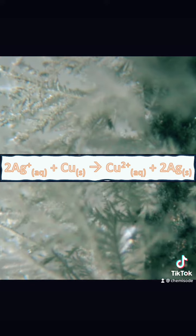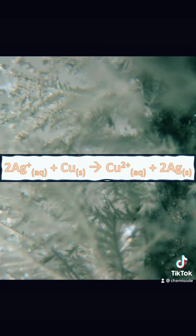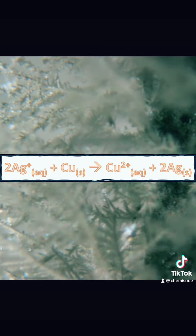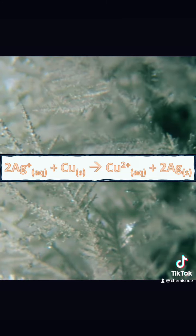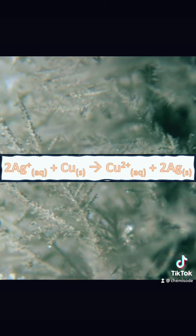So silver's oxidation number is going from +1 down to 0. That means the silver ions are being reduced. By default, that means the copper must be oxidized.